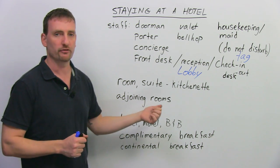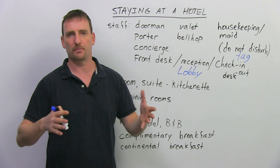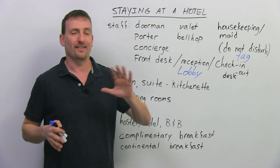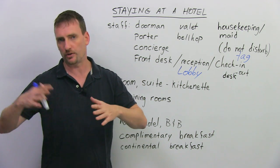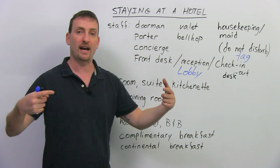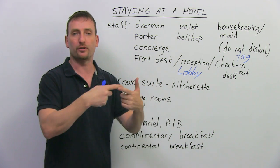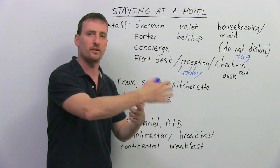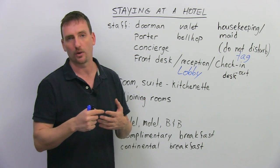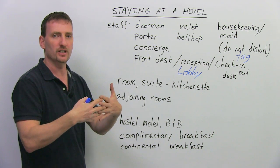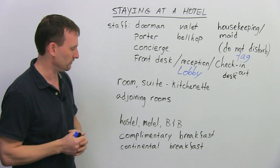You can get adjoining rooms. If you're with your family but you want to be separate, you have teenage kids, you get a room for them and a room for yourself, but you have a door between the two rooms that joins them. So you can go into their room, they can come into your room without going in the hallway. Adjoining means next to each other and joining, you can go through them.